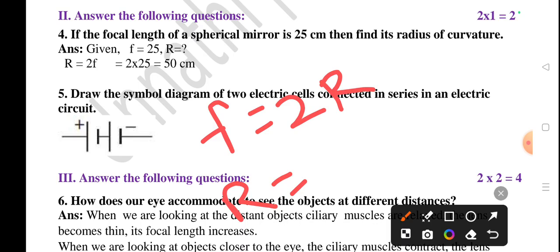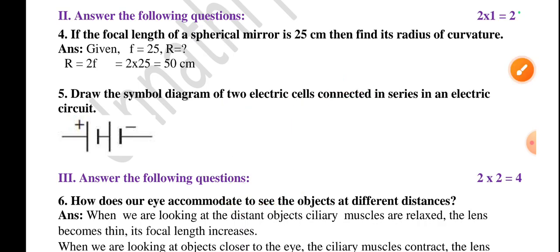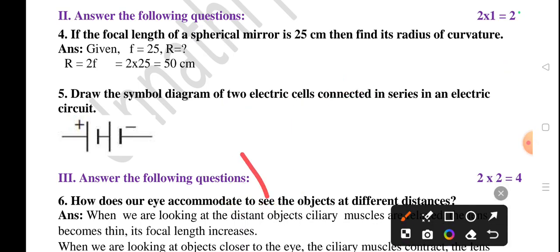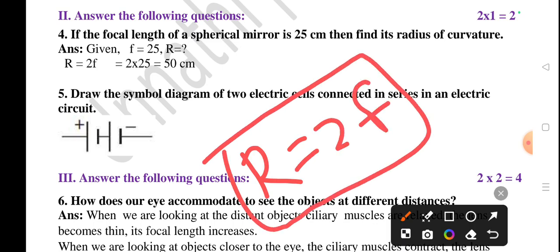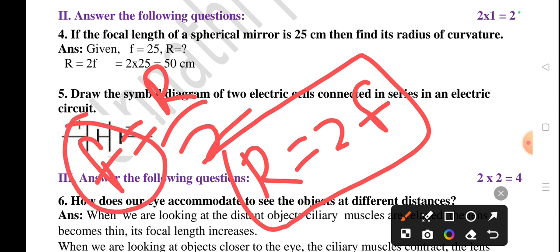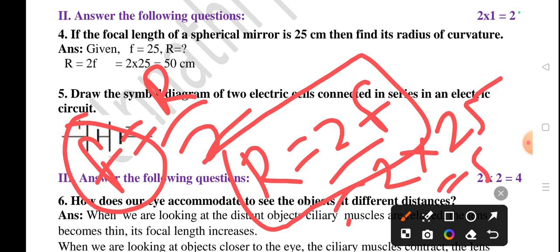Focal length F is equal to R by 2, or R is equal to 2F. It's a standard formula. Whenever we want to find focal length, we use F equals R by 2. But they've given focal length here, so we have to double it. R equals 2 into 25, which equals 50 centimeter. That's the right answer.